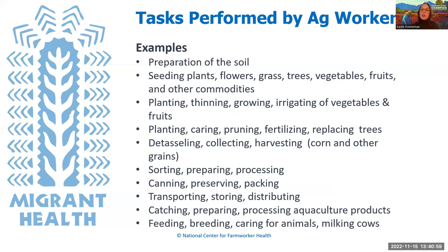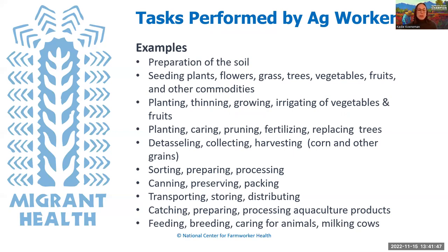In addition to being familiar with the industries that agricultural workers work in, it's also important to be aware of the tasks, because agricultural workers may identify by the tasks they do, not just by the industries. Most agricultural workers will not walk into your health center and self-identify as a migratory or agricultural worker — they'll share more specific information. Some example tasks include preparation of the soil, seeding, planting, thinning, growing, irrigating, detasseling, sorting, feeding, breeding, and caring for animals. This list is not exhaustive.